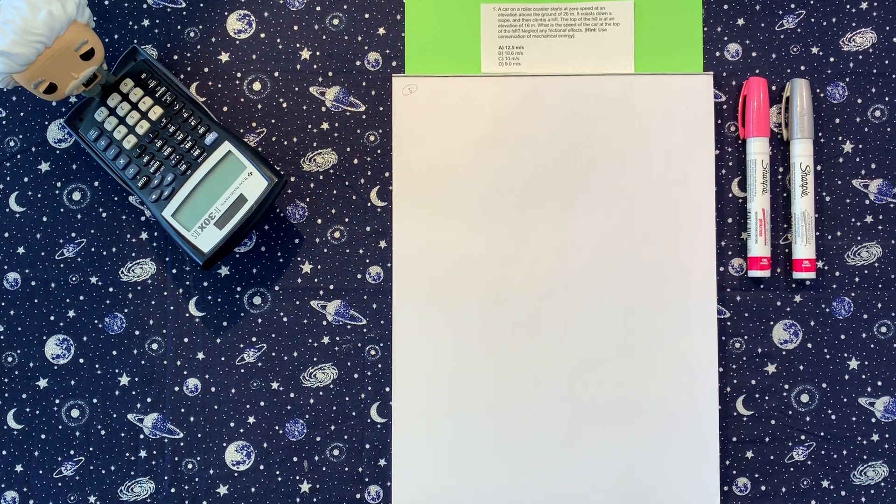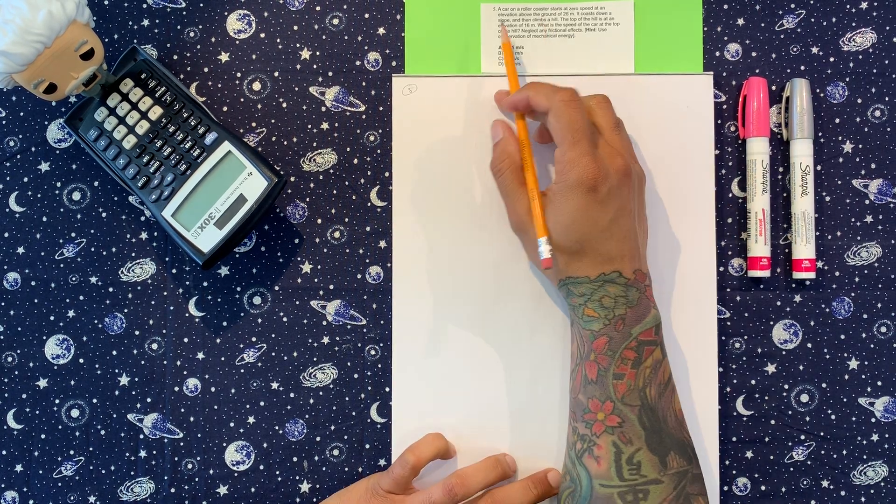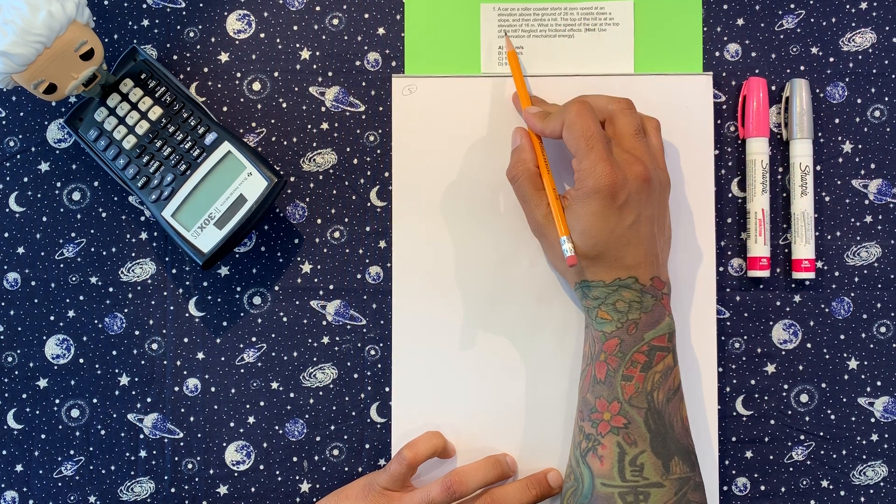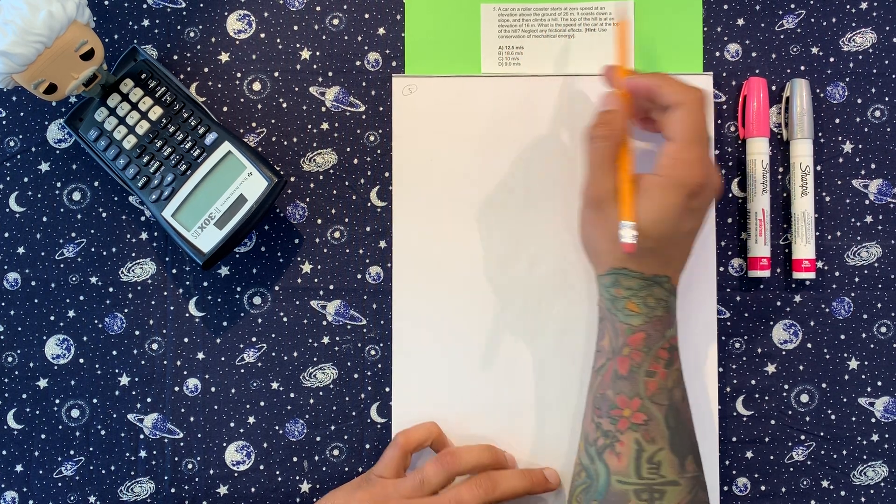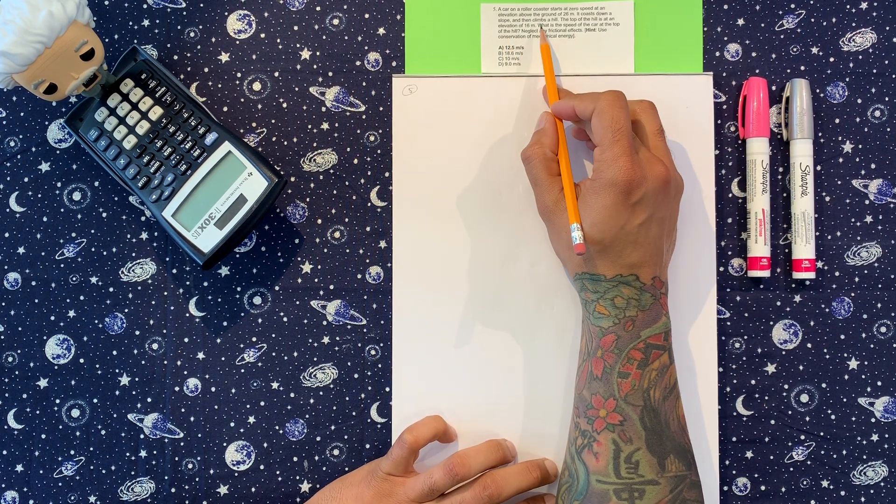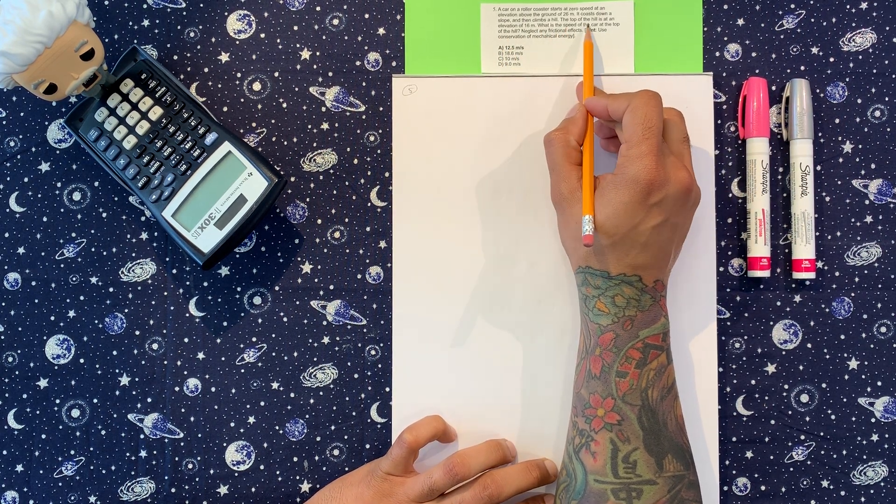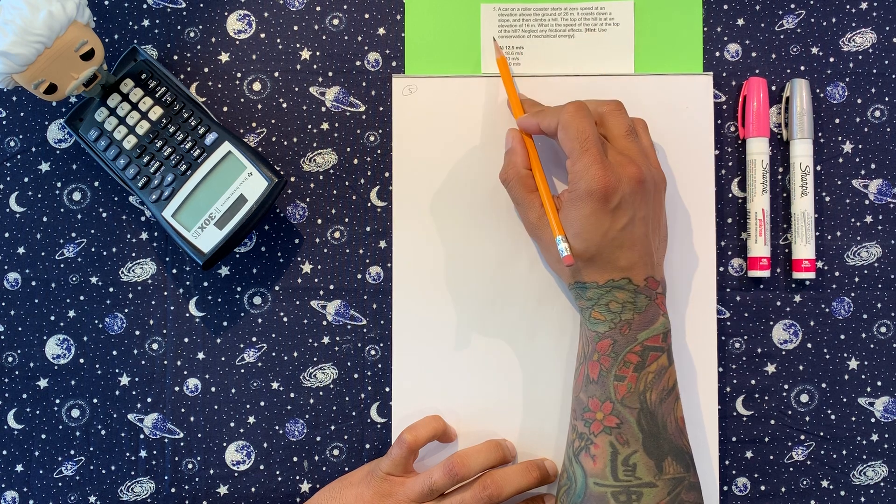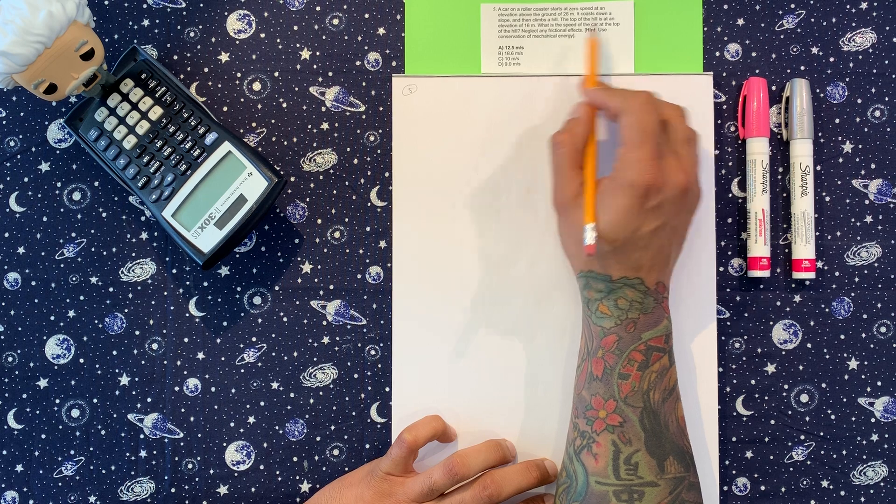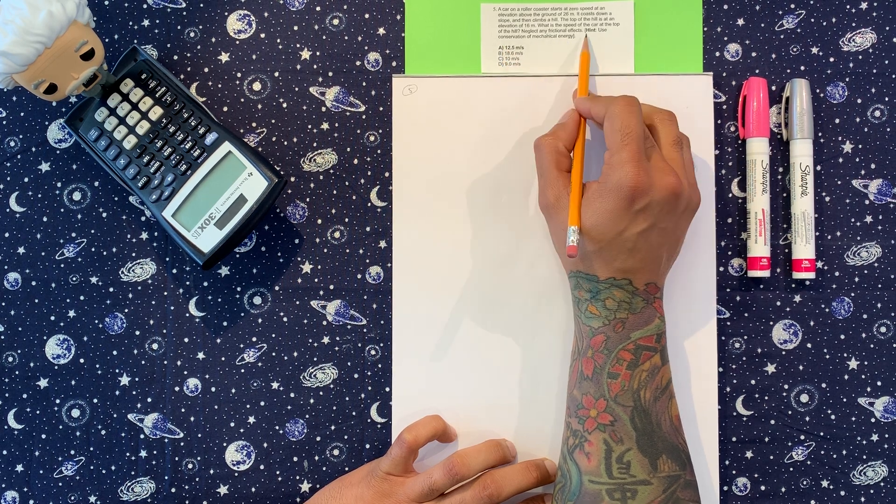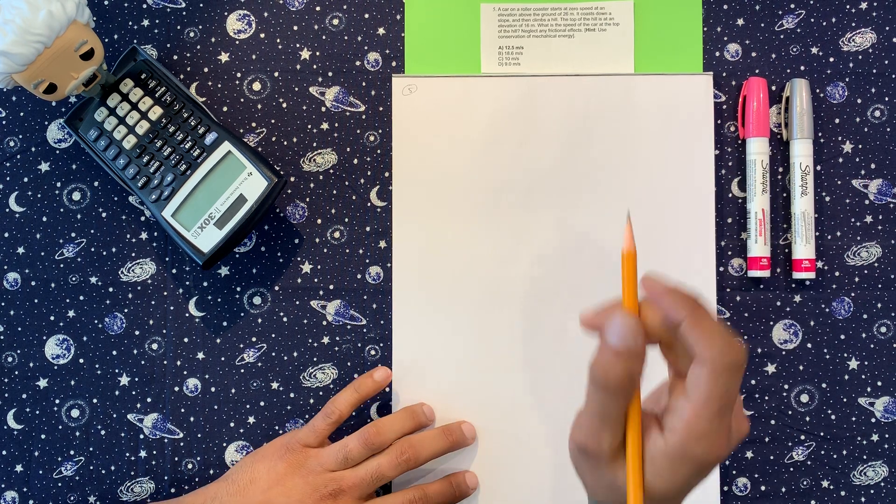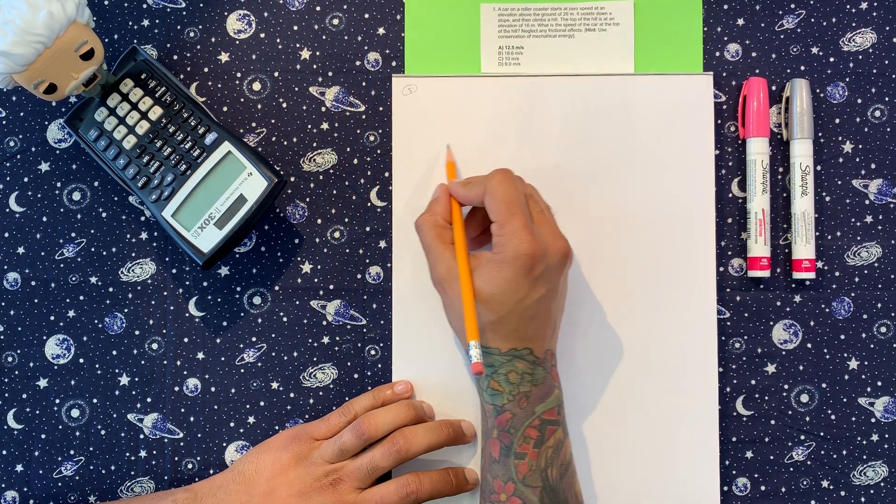Number five. We have a car on a roller coaster that starts at zero speed at an elevation above the ground of 26 meters. It coasts down a slope and then climbs a hill. The top of the hill is at an elevation of 16 meters. What is the speed of the car at the top of the hill? Neglect friction and use conservation of mechanical energy.